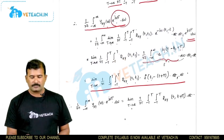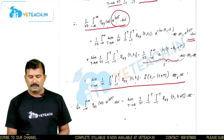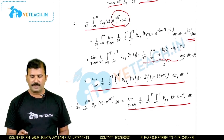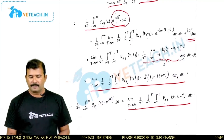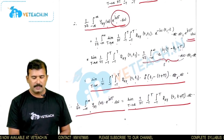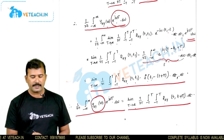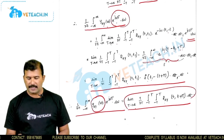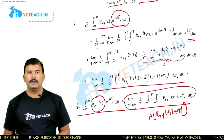Evaluating the delta function, t₁ is replaced by t + τ, giving: limit T→∞ of 1/2T times the integral from −T to T of R_xy(t, t+τ) dt. Hence we have proved that ψ_xy(ω) and the time average of the cross correlation function R_xy(t, t+τ) form a Fourier transform pair.